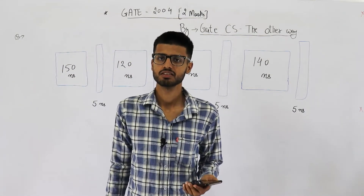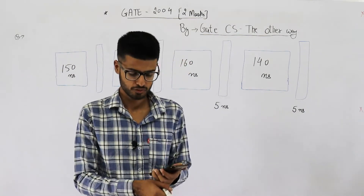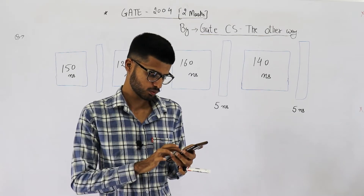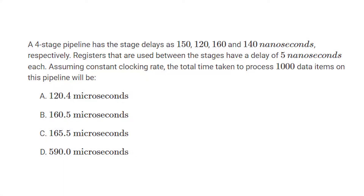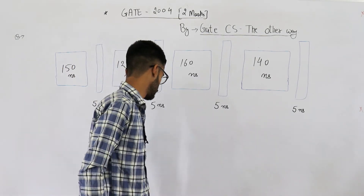Dear students, welcome. This question was asked in the GATE 2004 exam and is a 2-mark question. It reads: a 4-stage pipeline has stage delays of 150, 120, 160, and 140 nanoseconds respectively. Registers used between the stages have a delay of 5 ns each. Assuming a constant clocking rate, the total time taken to process 1000 data items on this pipeline will be — with four options provided.